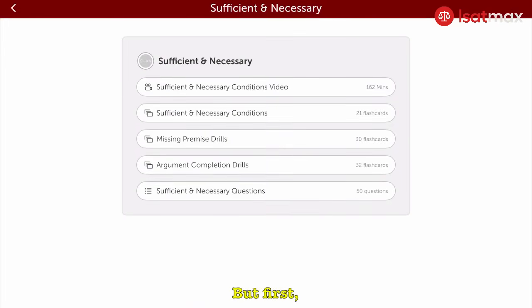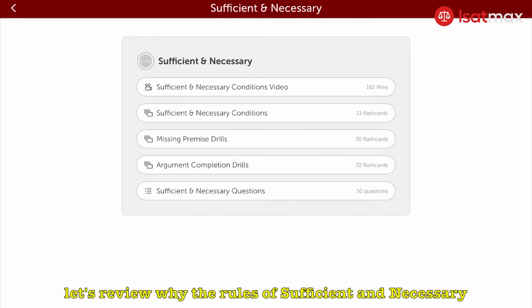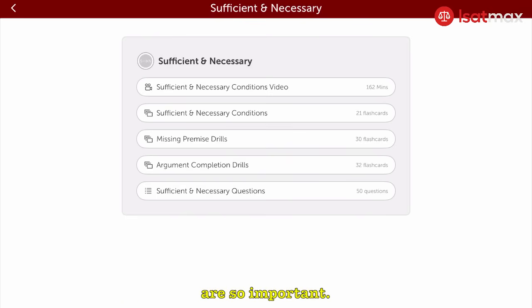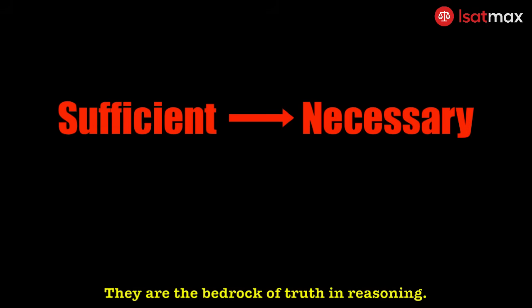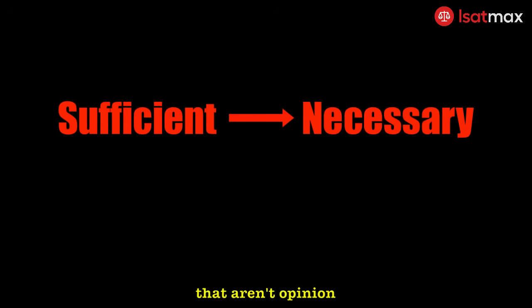But first, let's review why the rules of sufficient and necessary are so important. Sufficient and necessary conditions aren't just abstract logic puzzles. They are the bedrock of truth in reasoning. They allow us to draw conclusions that aren't opinion, but certainty.